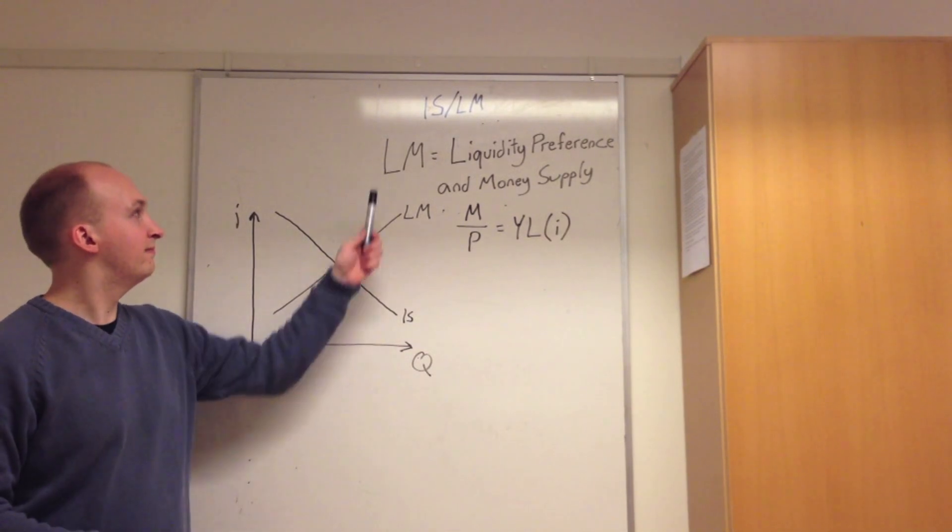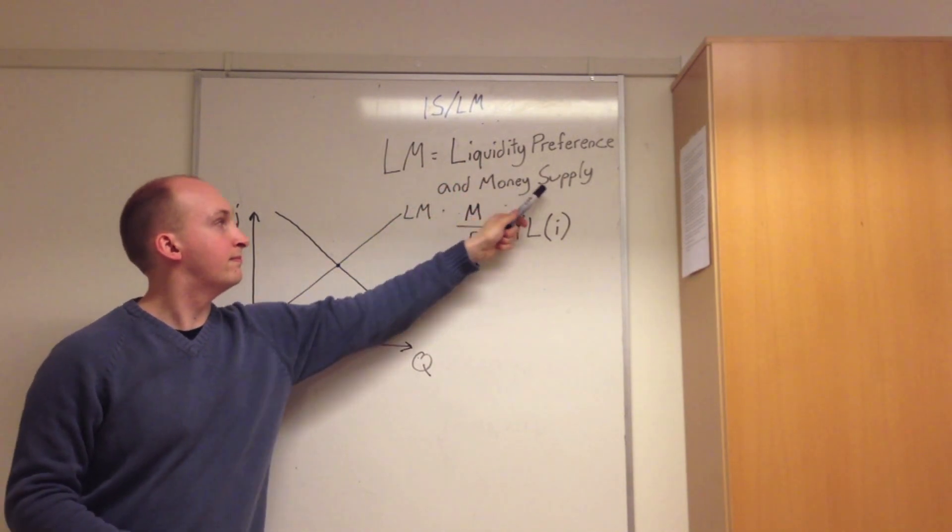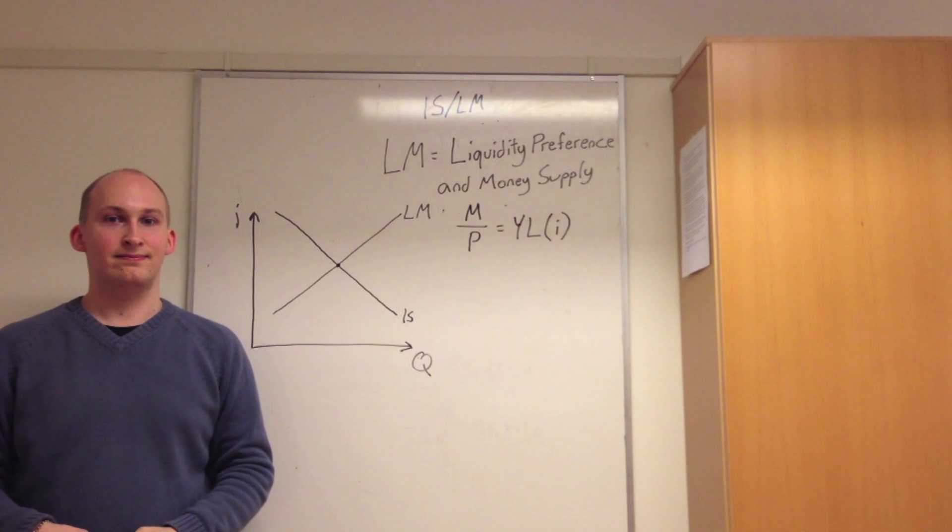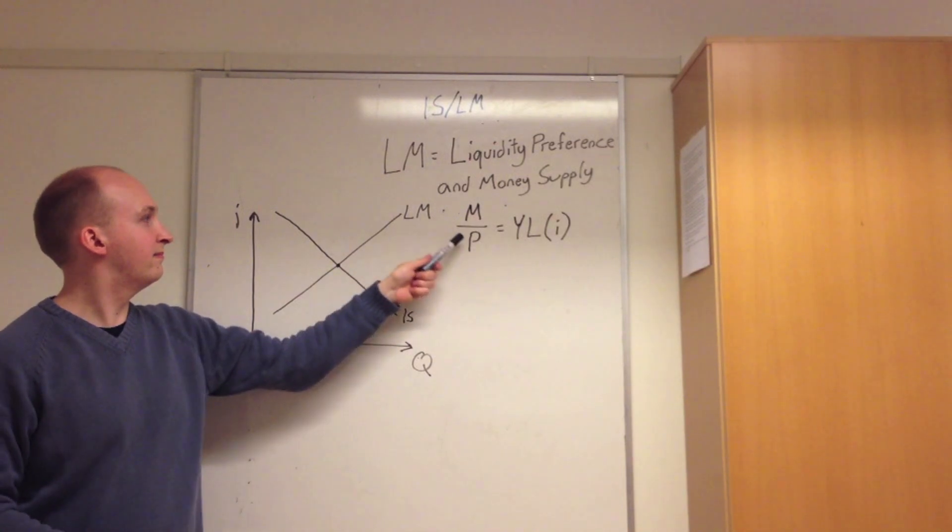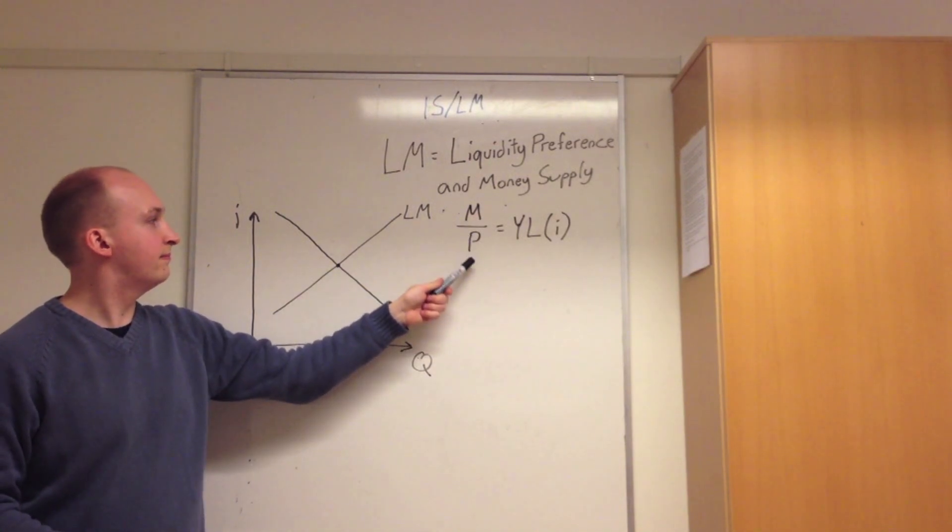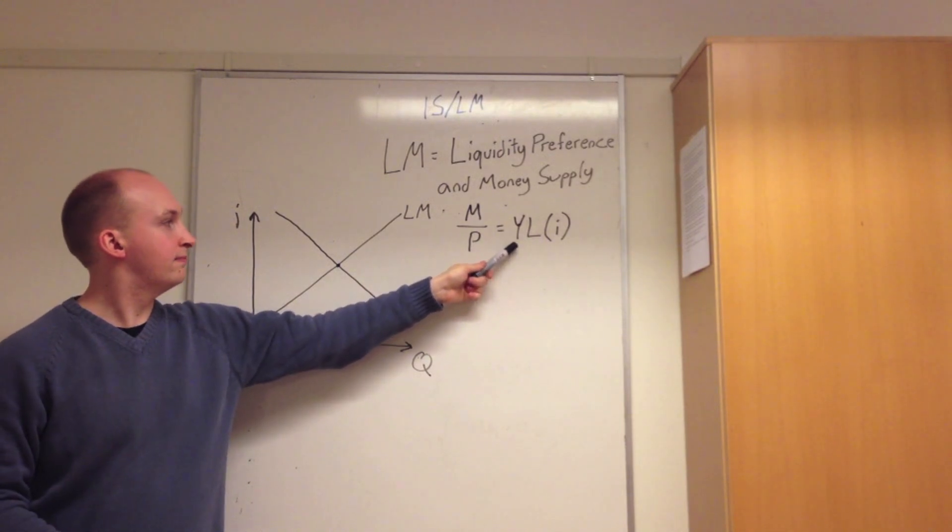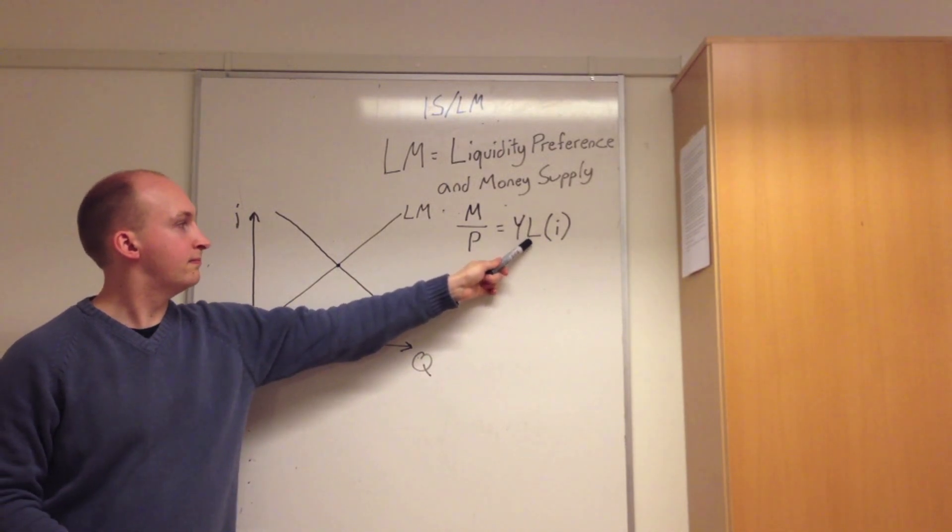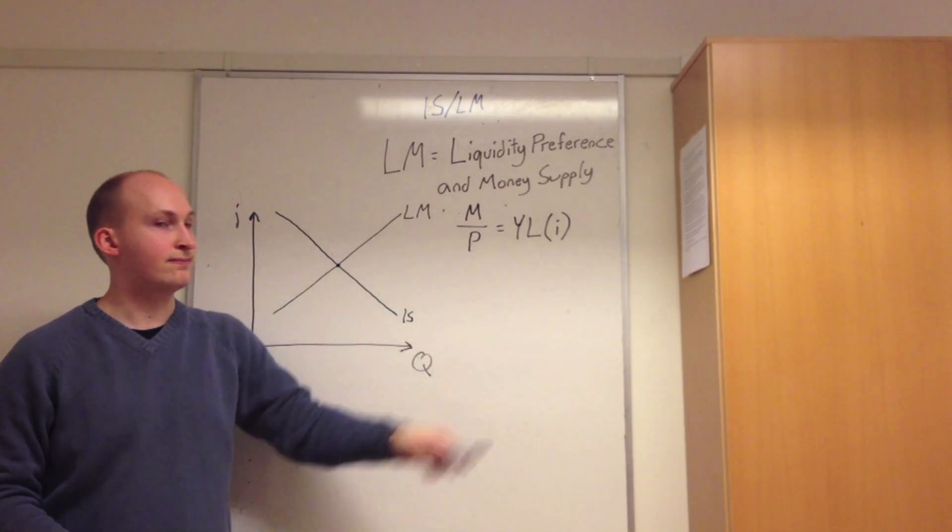which essentially describes LM being liquidity preference and money supply. Now we come to the equation for the LM curve. Our equation being where we have M, the nominal money stock, divided by P, the price level, which would equal our nominal income times by L, the real demand for money, which is a function of I, the nominal interest rate,